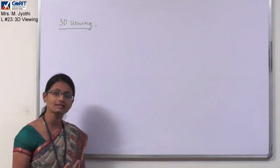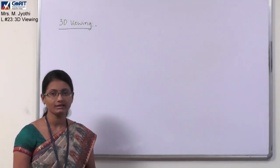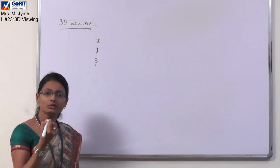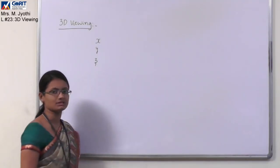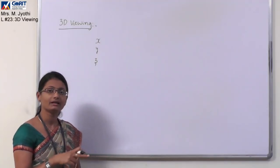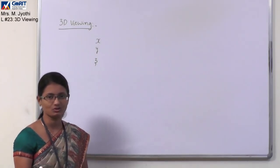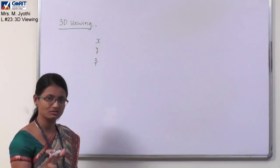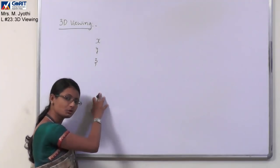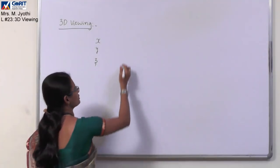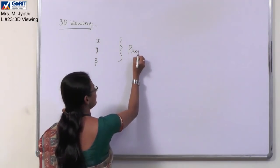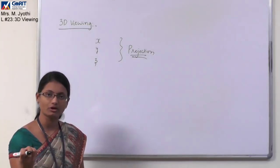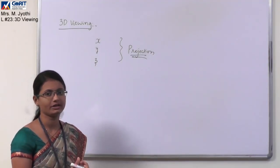In 3D, complexity is added because of the extra dimension. We have three dimensions X, Y, and Z, whereas in 2D we have only X and Y. Even though the object is three-dimensional, the display device is only two-dimensional. To compensate for this mismatch — converting a 3D object to a 2D view plane — we use a concept called projections.